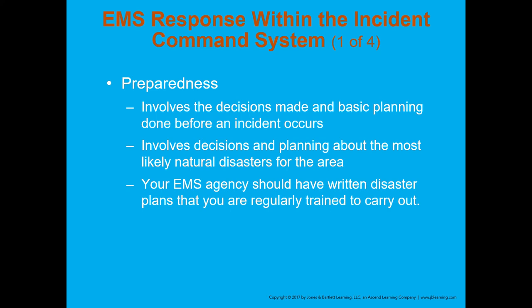EMS response within the ICS — preparedness involves the decisions made and basic planning done before an incident occurs, keeping the proper amount of equipment and different resources available. It involves decisions and planning about the most likely natural disasters for the area. Something like a hurricane we're not concerned with in the state of Ohio, but tornadoes — yes, we're going to make decisions and plan for those. Your EMS agency should have written disaster plans that you're regularly trained to carry out.